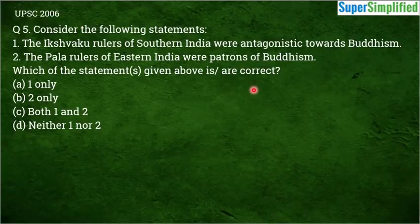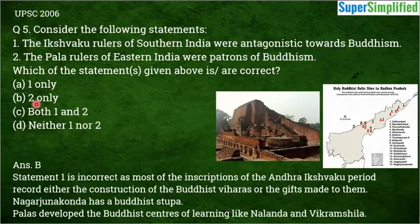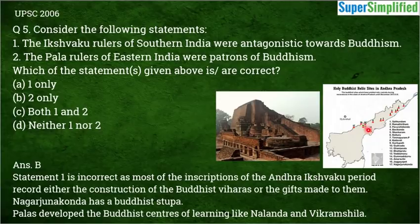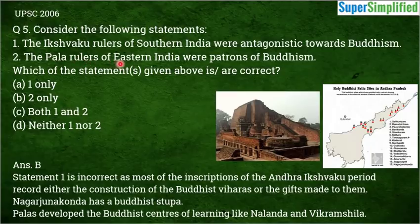The correct answer is B — Statement 2 only. Statement 1 is incorrect because the Ikshwaku rulers of Southern India were not against Buddhism. In fact, if you look at an Andhra Pradesh map, you will find Buddhist relic sites there, including Nagarjunakonda Stupa. Buddhism flourished under the Ikshwaku rulers of Southern India. Statement 2 is correct — the Pala rulers of Eastern India supported Buddhism and developed major Buddhist learning centers like Nalanda and Vikramshila.